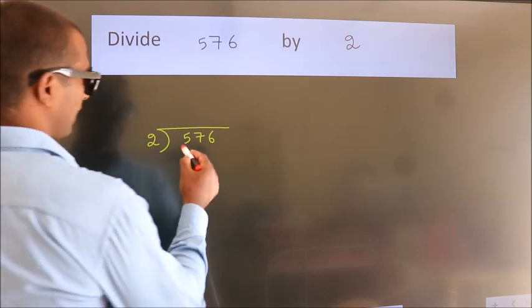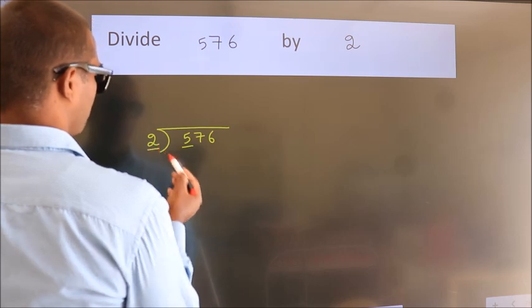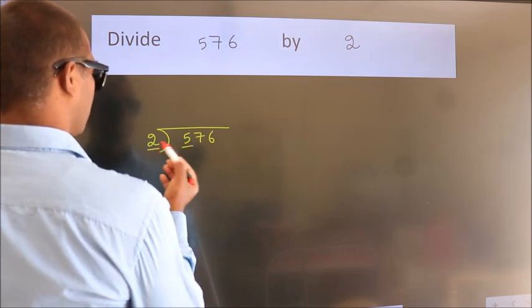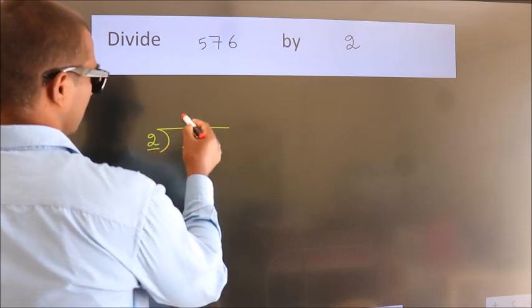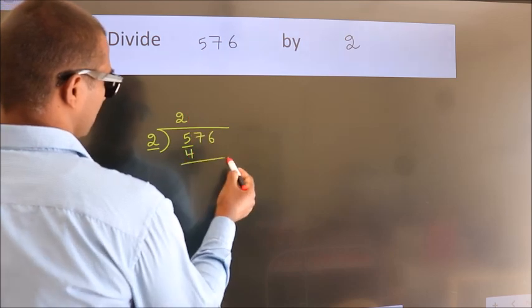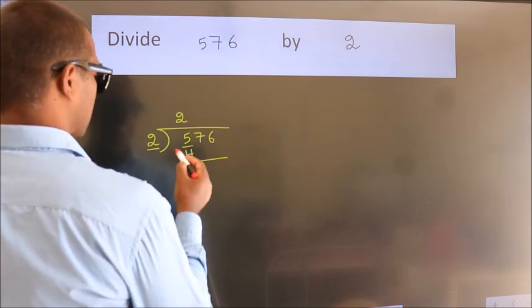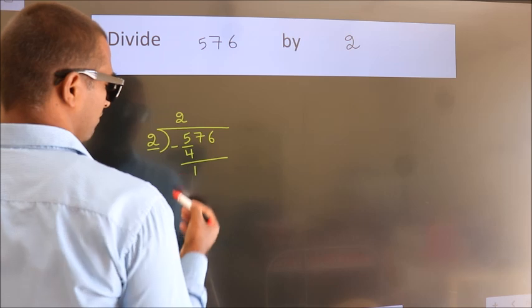Next, here we have 5, here 2. A number close to 5 in 2 table is 2 2s, 4. Now, we should subtract. We get 1.